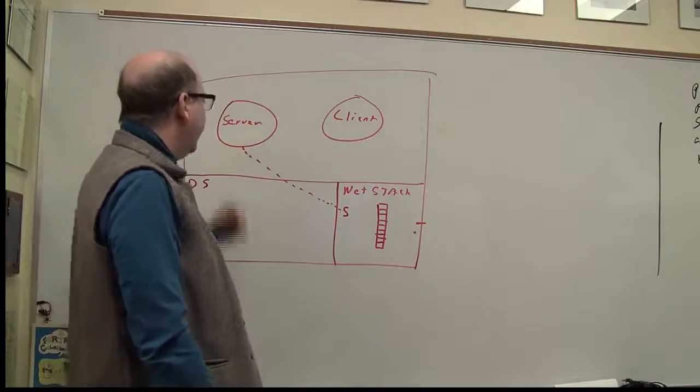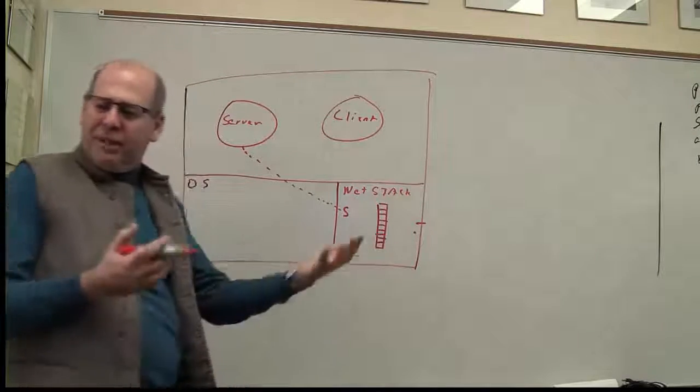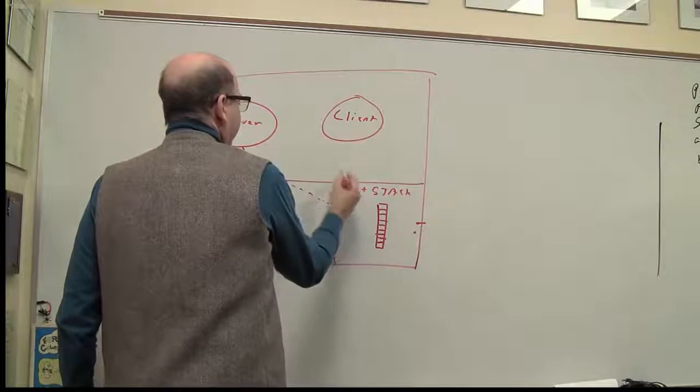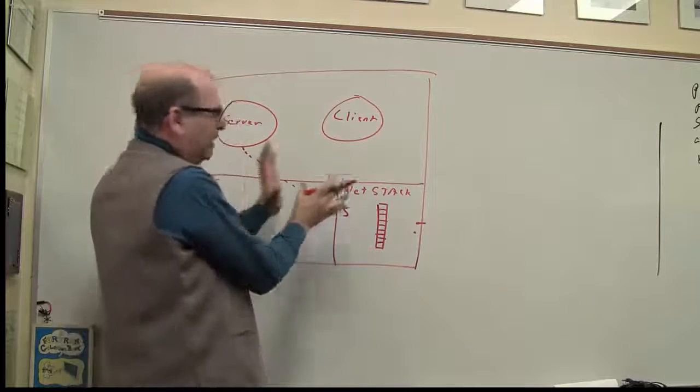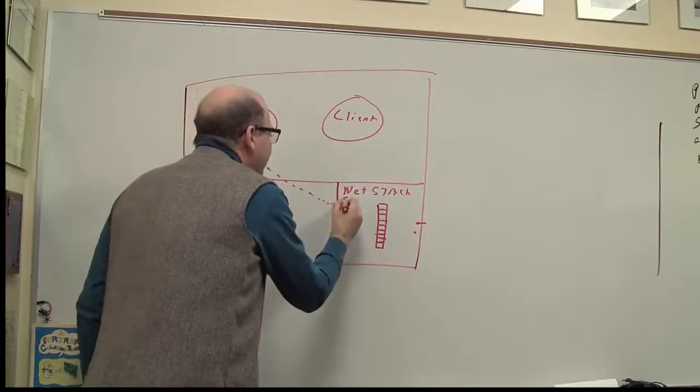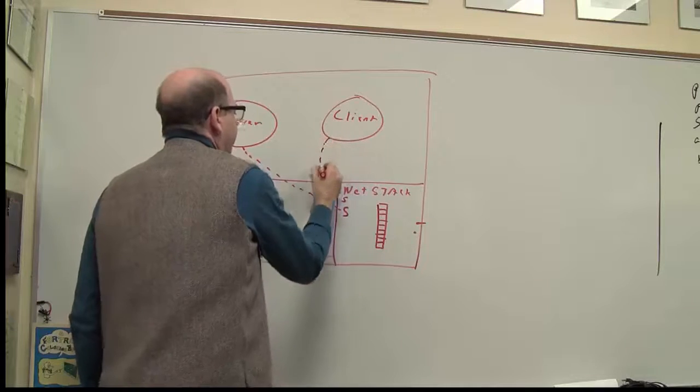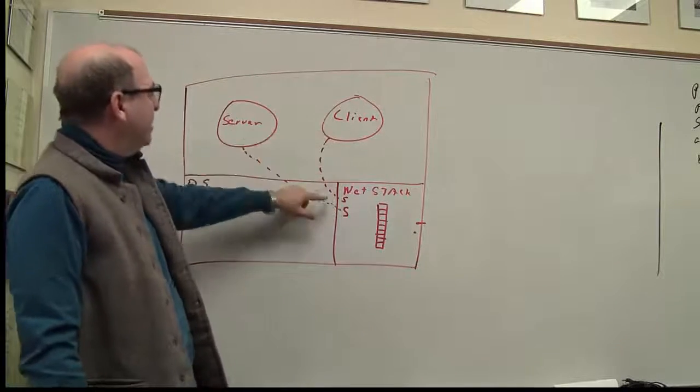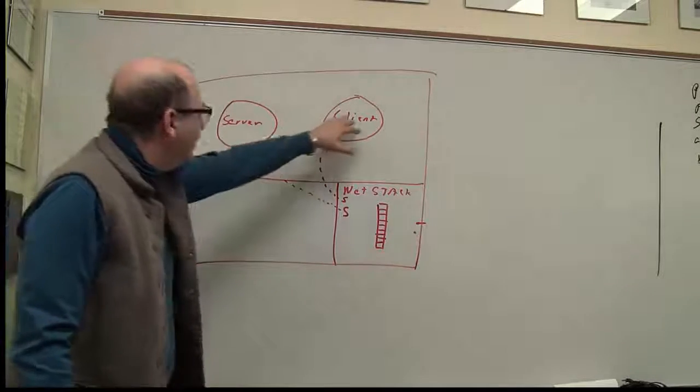And our client also wants to communicate over the network, so it's going to make a socket. So it makes a request to the operating system, which asks the network subsystem to make a socket. So the server can talk to this socket, the client can talk to this socket, but in reality, the client wants to talk to the server.